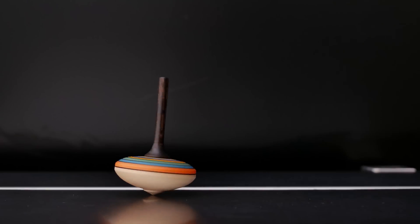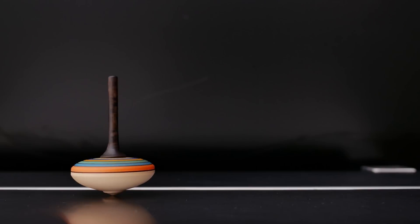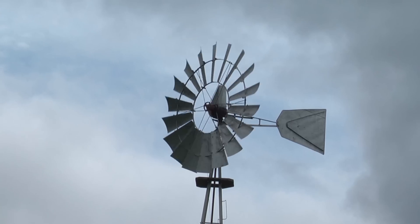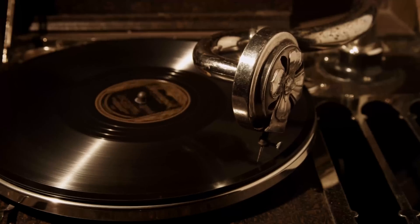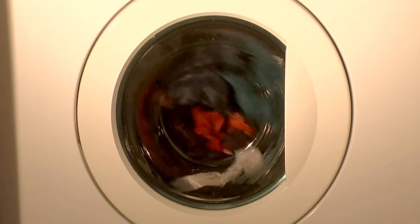When something turns around an axis, we call this rotation. We see rotation all around us. A merry-go-round on a playground, a vinyl record on a turntable, even a washing machine that cleans our clothes.